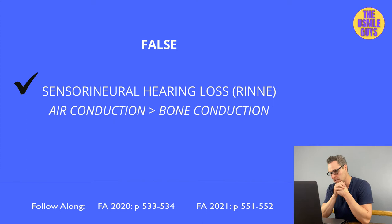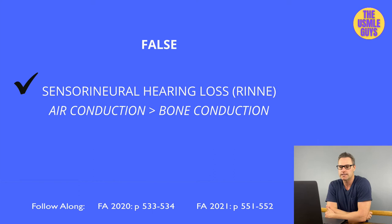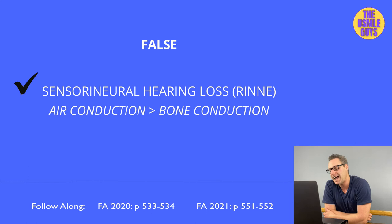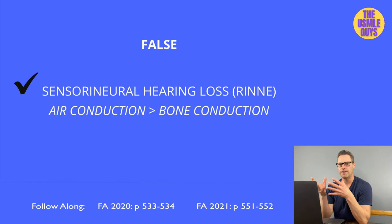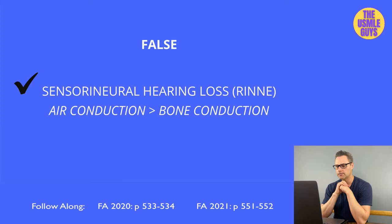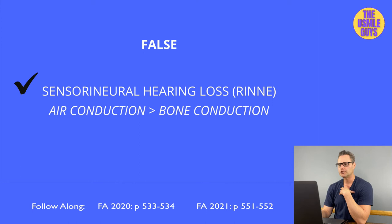This is false. In conductive hearing loss, something in the ear canal prevents air conduction, so bone conduction is greater than air conduction in the Rinne test. In sensorineural hearing loss, air conduction is greater than bone conduction. Summary: Weber — conductive isolates to the affected side, sensorineural to the unaffected side. Rinne — conductive: bone > air; sensorineural: air > bone.